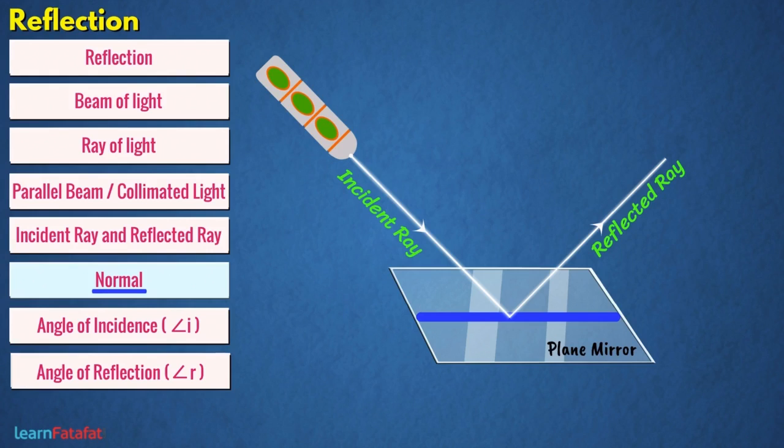make a line perpendicular to the surface of the mirror at the point of intersection of incident and reflected ray, then the line is called the normal.